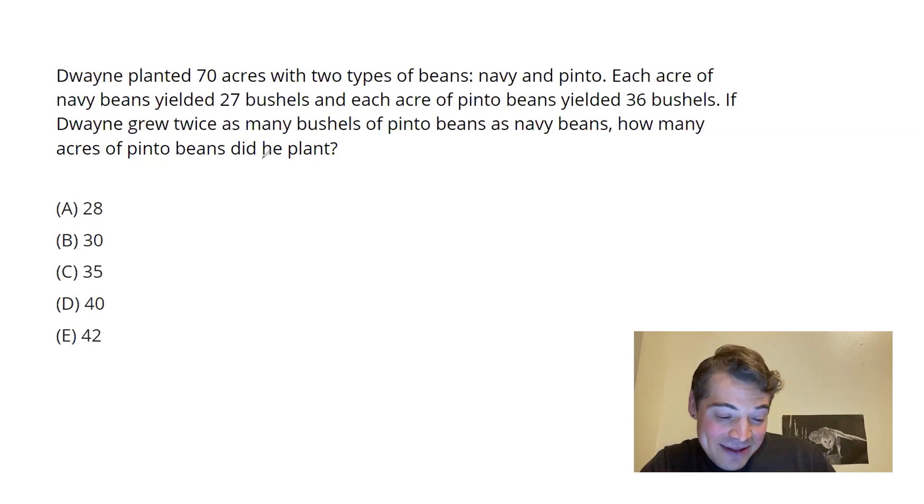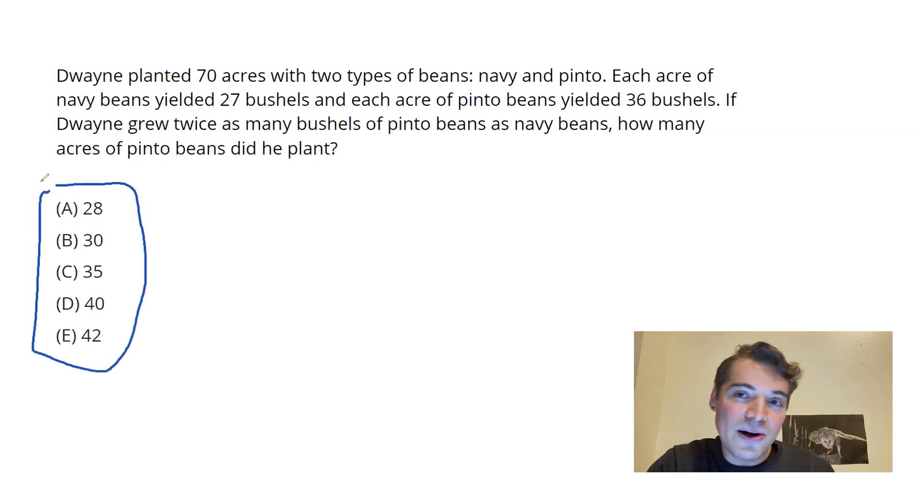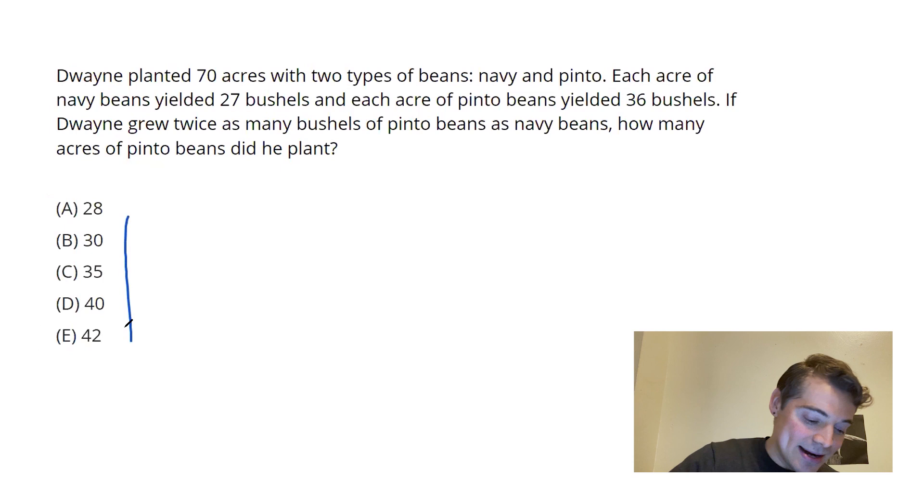As stated, if the algebraic equations aren't coming to you, you might want to try back-solving. The other big element to back-solving here is if I look at my answer choices, and I notice they are all integers that I could plug in, then I've got the green light. If these had been fractions or decimals or something nasty to plug in, I don't necessarily want to back-solve. But here, they're integers, they go in ascending order, so all good to go.